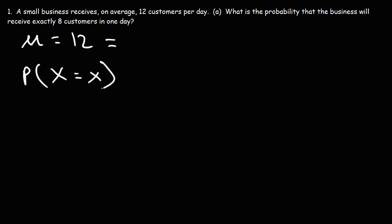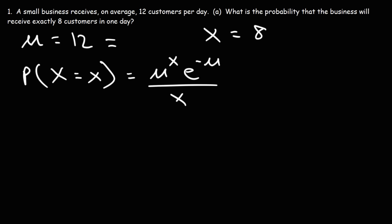Capital X is the random variable. Lowercase x, in this case, is 8 — that's the probability we're trying to calculate. We want to know the probability that the business will receive exactly 8 customers in one day, so x is 8. The formula is mu raised to the x, times e to the negative mu, divided by x factorial.